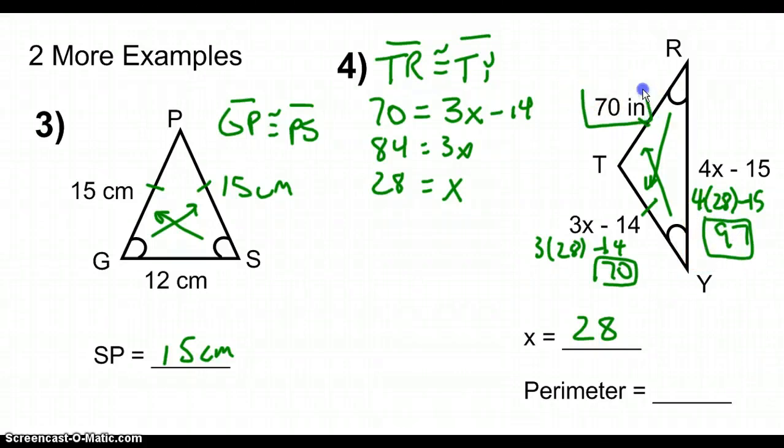So taking the lengths of the three sides, 70 plus 70 plus 97, the length of those three sides add together is 237. So the perimeter of triangle TRY is 237 inches.